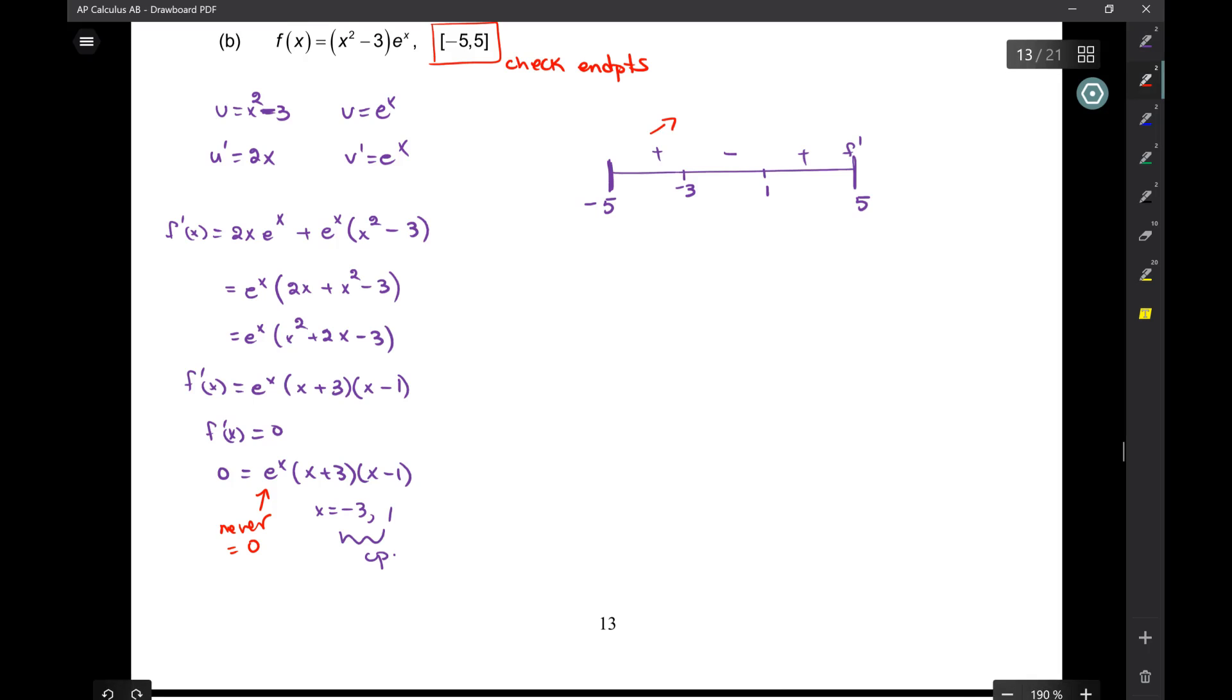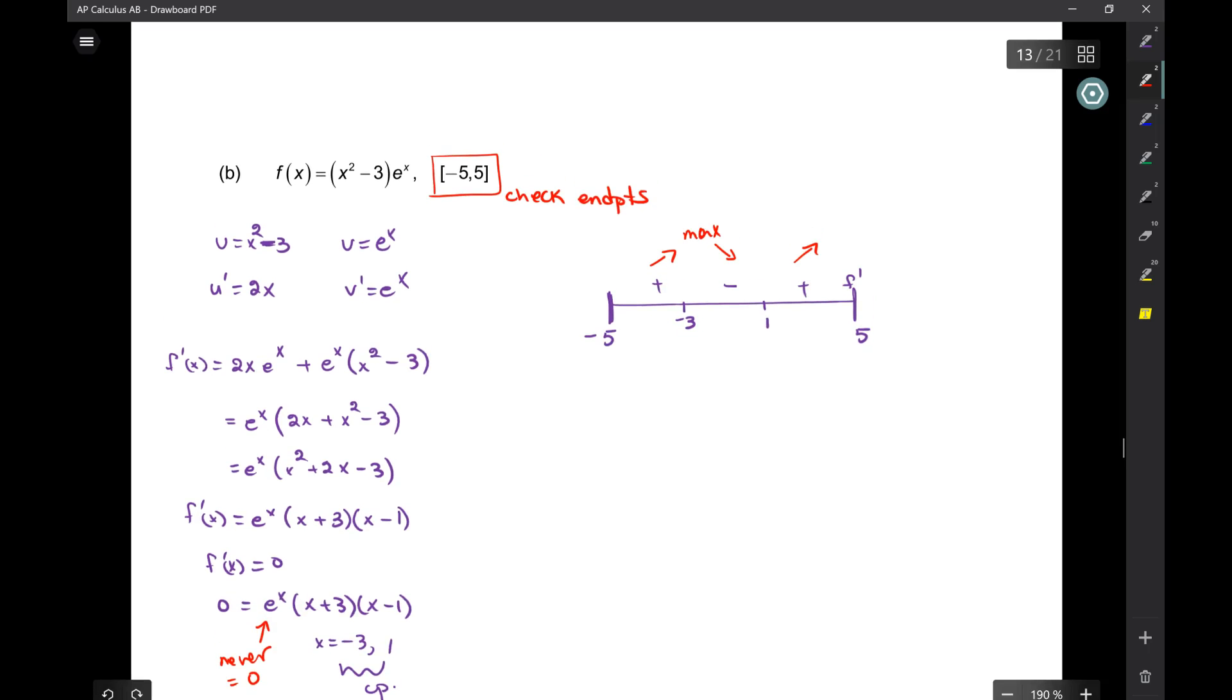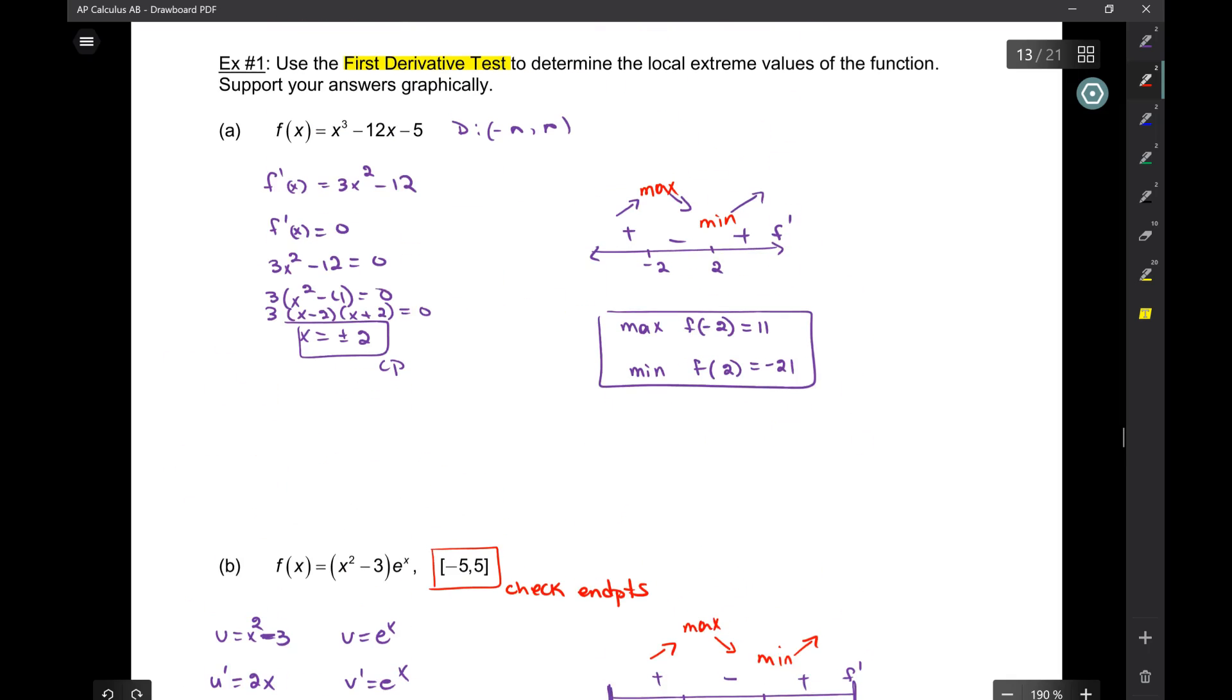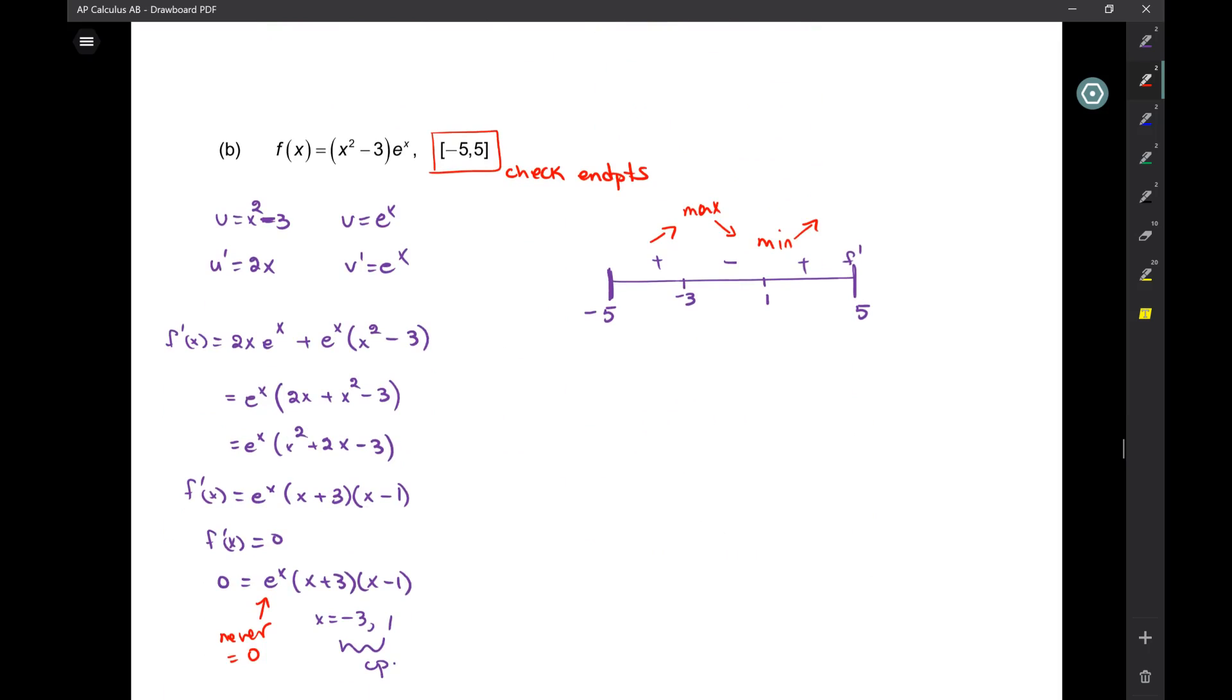So now take a look. So that's f prime. So f is increasing, decreasing, increasing. Now, I absolutely know that there is a max here and a min here, just like we did up there. But because now I have closed endpoints, I also know that I have a minimum at the negative 5, right? And I have a maximum at the 5. Do you see that?